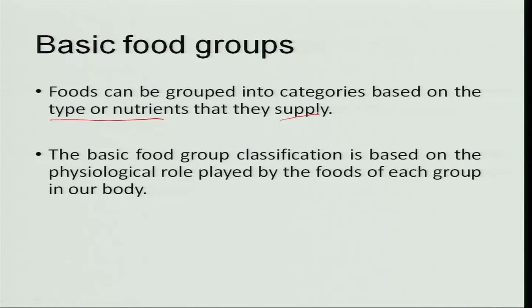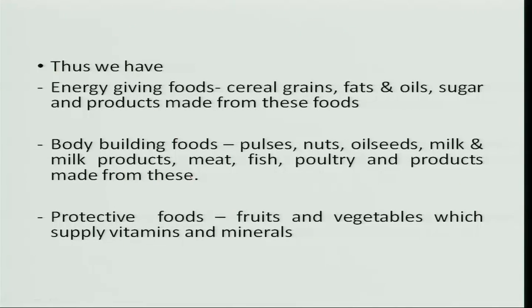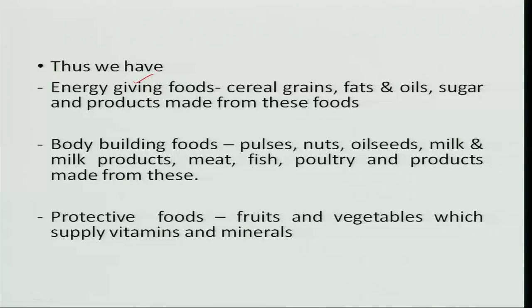We have different classifications. One is the basic food group, where food is grouped into categories based on the type of nutrients they supply. Depending upon the physiological role they play in the body, foods are divided into: energy-giving foods, which include cereal grains, fats and oils, sugar and their products; and body-building foods, which include pulses, nuts, oil seeds, milk and milk products, meat, fish, poultry, and their products.